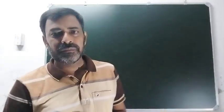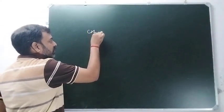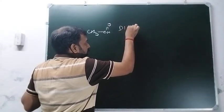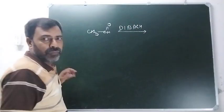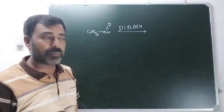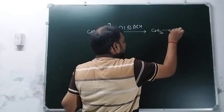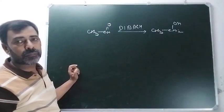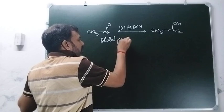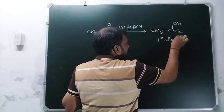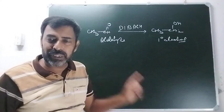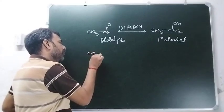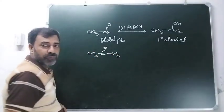We are starting with the reduction. Simply aldehyde लेते हैं - CH3 CH double bond O - और mild reducing agent से treat करें like DIBAL-H (di-butyl aluminum hydride). In the case of aldehyde, the product is a primary alcohol. In the case of ketone, जैसे acetone, if we treat this with DIBAL-H.